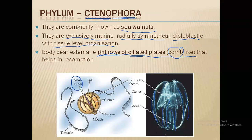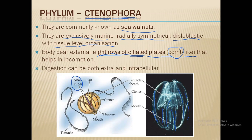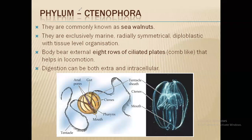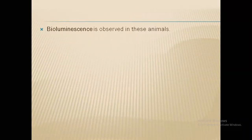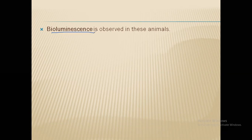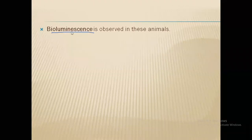Besides the comb plates, they also have an anal pore responsible for excretion. They have only tissue-like structures and no complete organs like stomach or intestine — a similarity with Coelenterata. A very unique property is bioluminescence: they can emit light. These organisms are found in very deep sea where sunlight does not reach and they live in almost complete darkness, so to attract their prey they produce light — this ability is called bioluminescence.